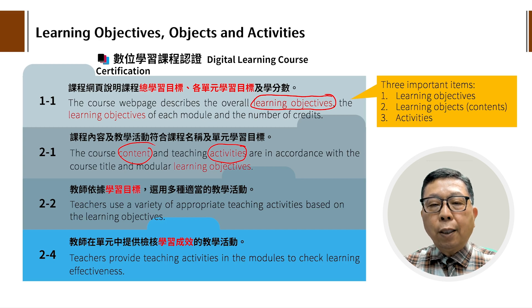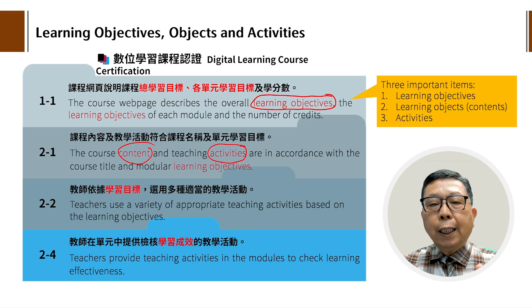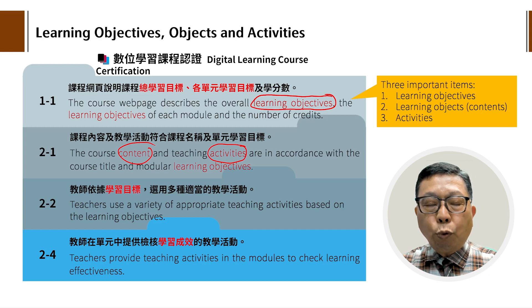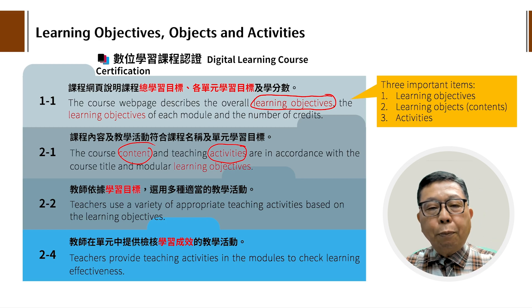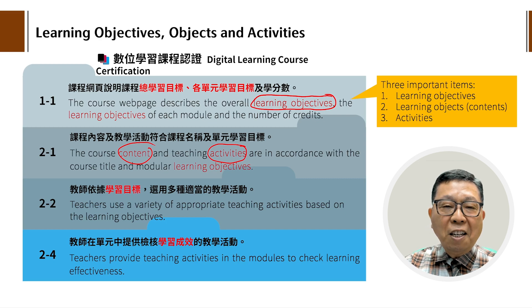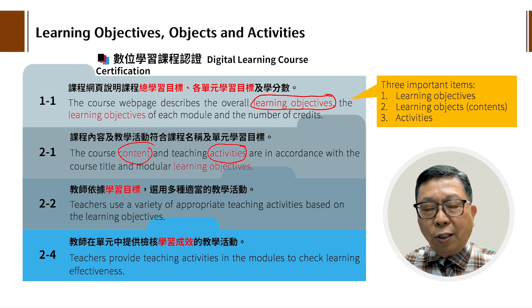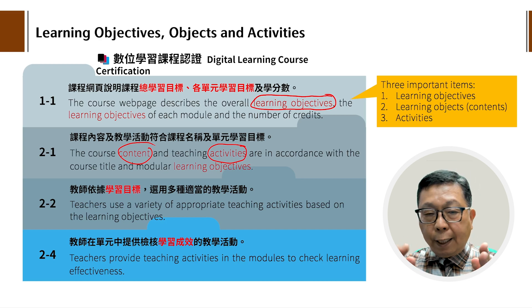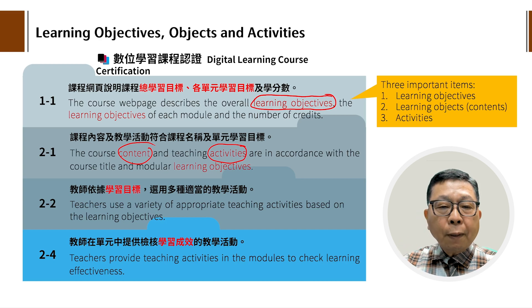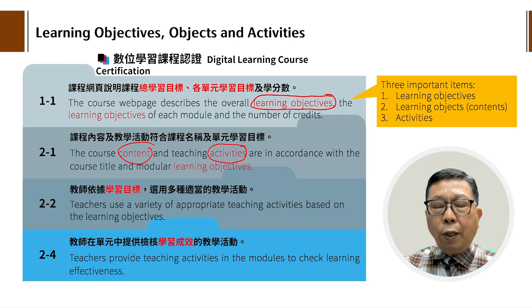符合课程名称及单元学习目标，也就是说学习目标设计完以后，你就必须对应的教学内容跟教学活动来realize你所规范出来的Learning objectives，让它能够达到你要的目标。这是教育部规范出来的要求。第2-2条讲到教师必须依据学习目标来规划教学。